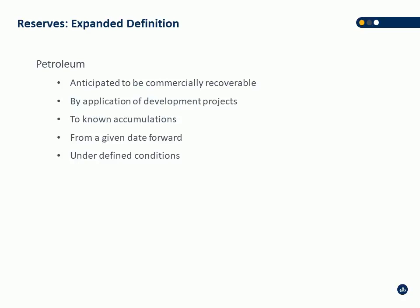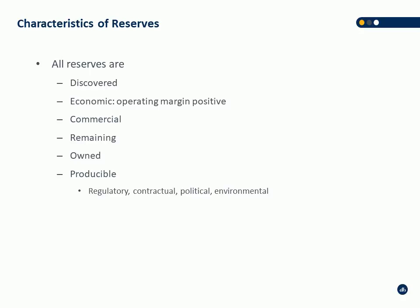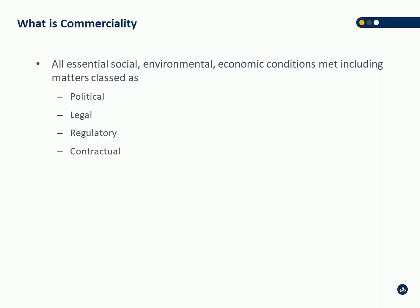These are the actual words out of PRMS — slightly different than the COGI ones but identical in intent. Reserves are discovered; economic, defined as a positive operating margin; commercial; remaining; owned; and producible — which includes all factors listed: regulatory, contracts, political, and environmental factors. For commerciality, political, legal, regulatory, and contractual conditions all have to be met and understood before you can classify volumes as reserves.